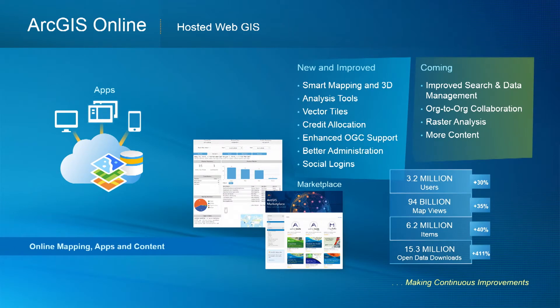The second main pillar on this component of the overall system is ArcGIS Online, and this is hosted GIS. Here we've done a lot of work in the last year — again introducing smart mapping tools, vector tile support, social logins and so on.